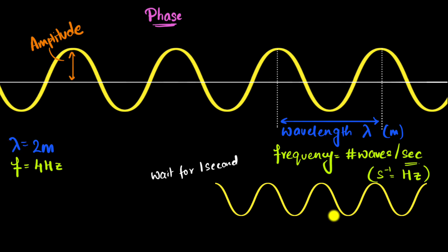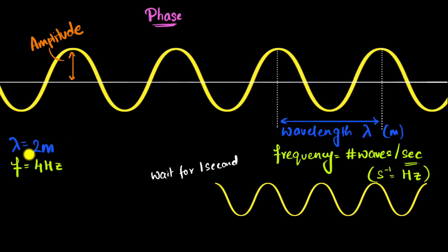If I figure out the total distance covered, that represents the total distance traveled by the wave in one second — and that is the speed. I know the wavelength of this wave, so can you pause and think about what this total distance is going to be, and what the relationship between velocity, frequency, and wavelength would be?